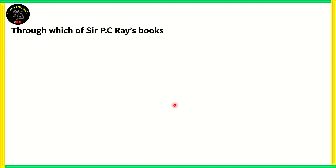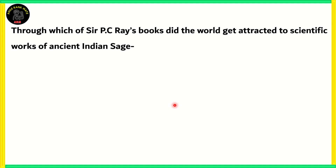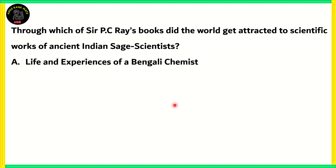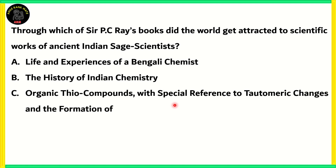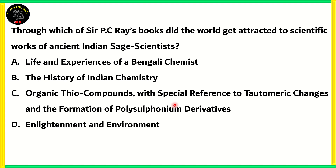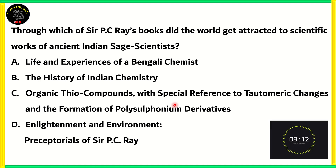Next question: Through which of Sir P.C. Ray's books did the world get attracted to the scientific works of ancient Indian sage scientists? A) Life and Experiences of a Bengali Chemist, B) The History of Indian Chemistry, C) Organic Thio Compounds with Special Reference to Totemic Changes and the Formation of Polysulfonium Derivatives, or D) Enlightenment and Environment — Preceptorials of Sir P.C. Ray.